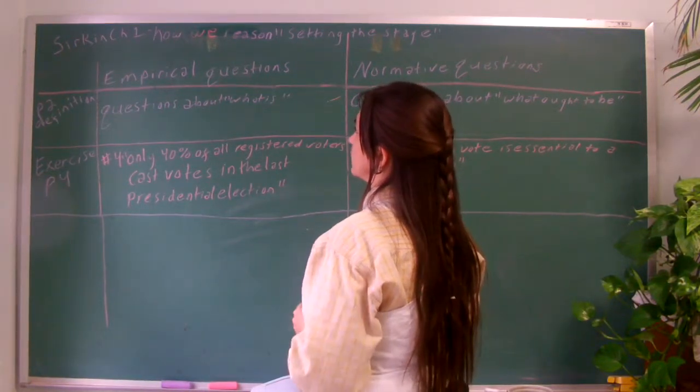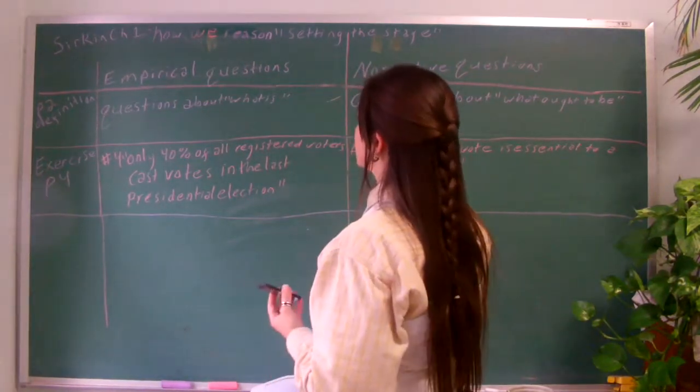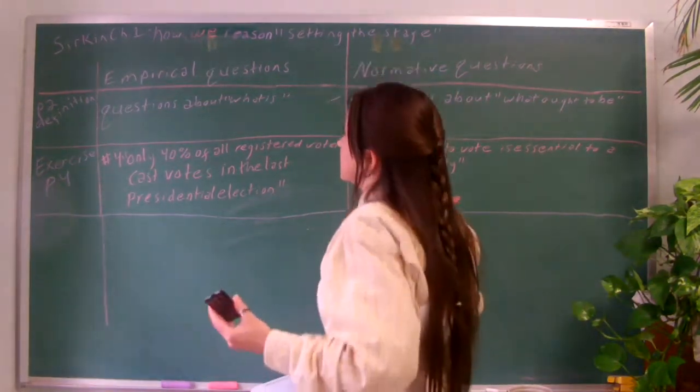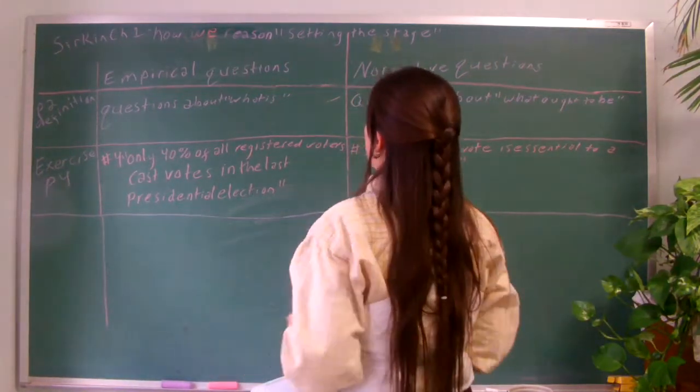So basically, now that you're on Sirkin page 2, Chapter 1, the definition. Sirkin is trying to set up statistics here. He has two things saying there's two types of questions.